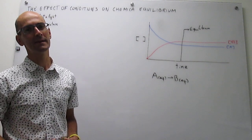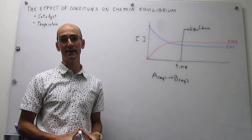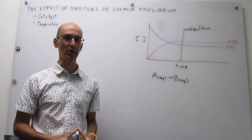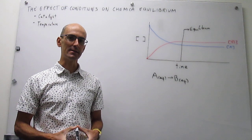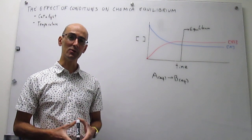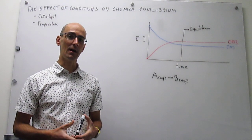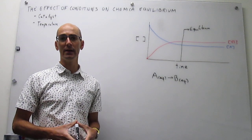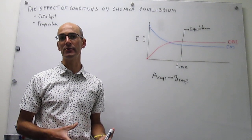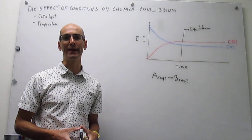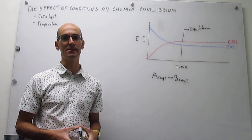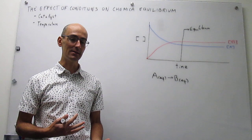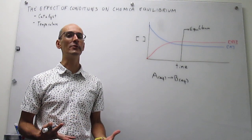In this video we examine the effect of conditions on equilibrium constants. Specifically, we're going to be looking at whether a catalyst changes an equilibrium constant and whether temperature affects the value of that equilibrium constant. Let's start with the effect of a catalyst on an equilibrium constant.